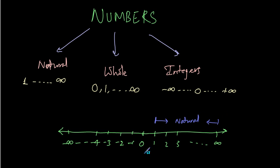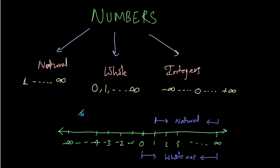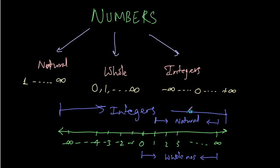The whole numbers include natural numbers plus the number 0, so whole numbers start from 0 and go on till infinity. All of the numbers present on the number scale are integers, which include negative numbers, the number 0 and the positive numbers — all are integers. So, whole numbers and natural numbers are a subset of integers, and natural numbers are a subset of whole numbers.